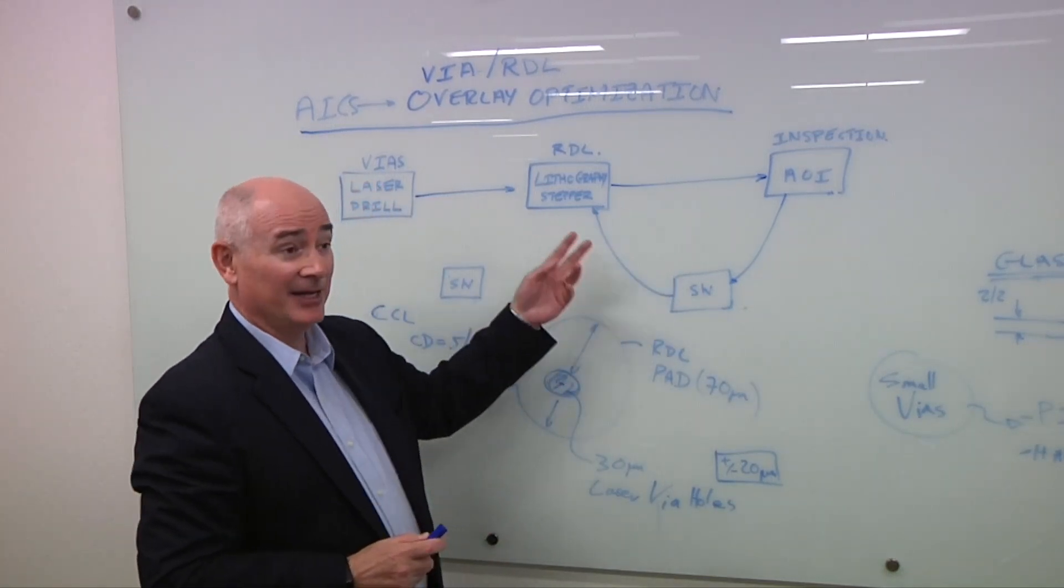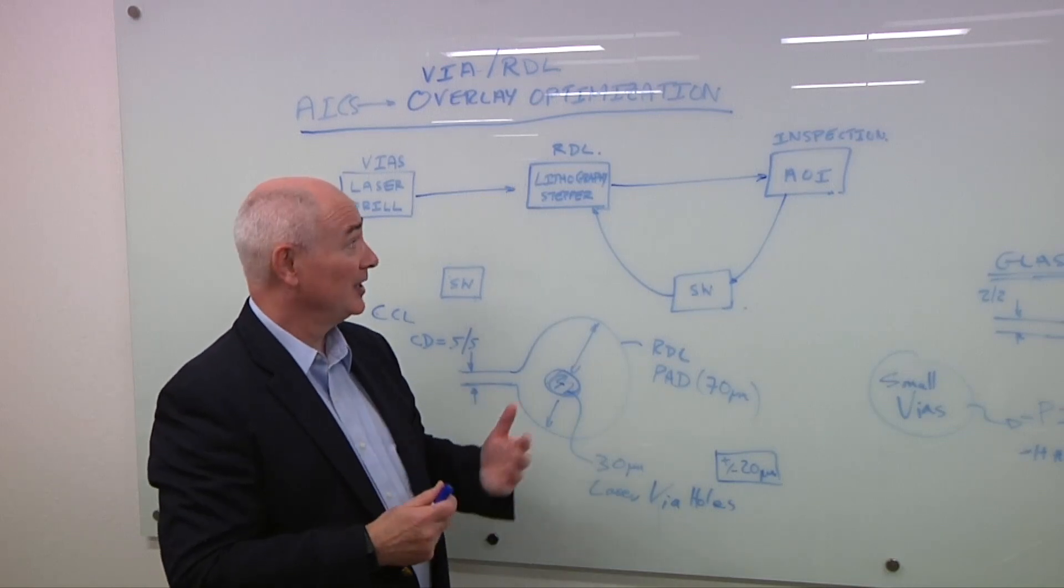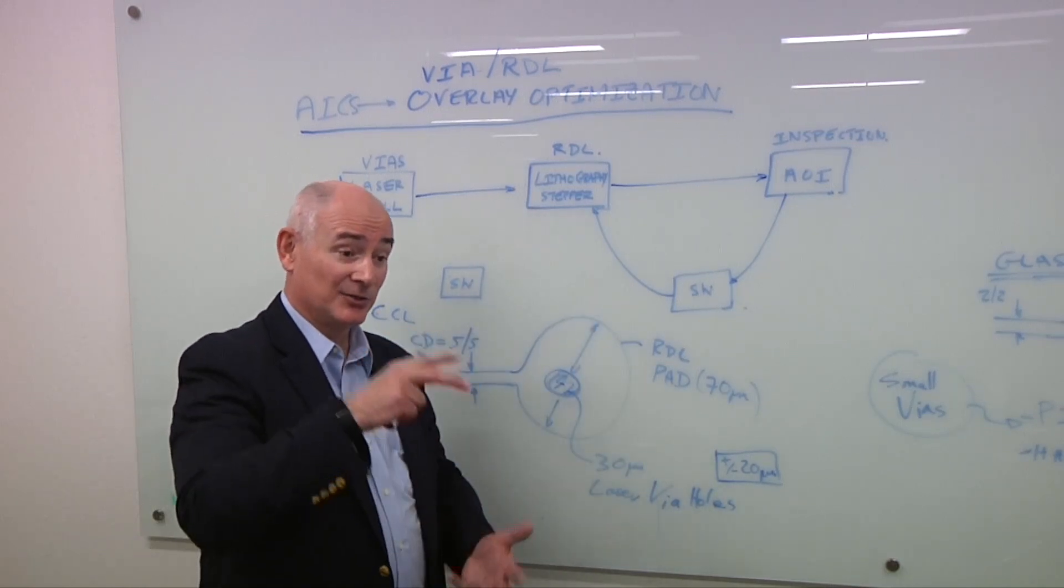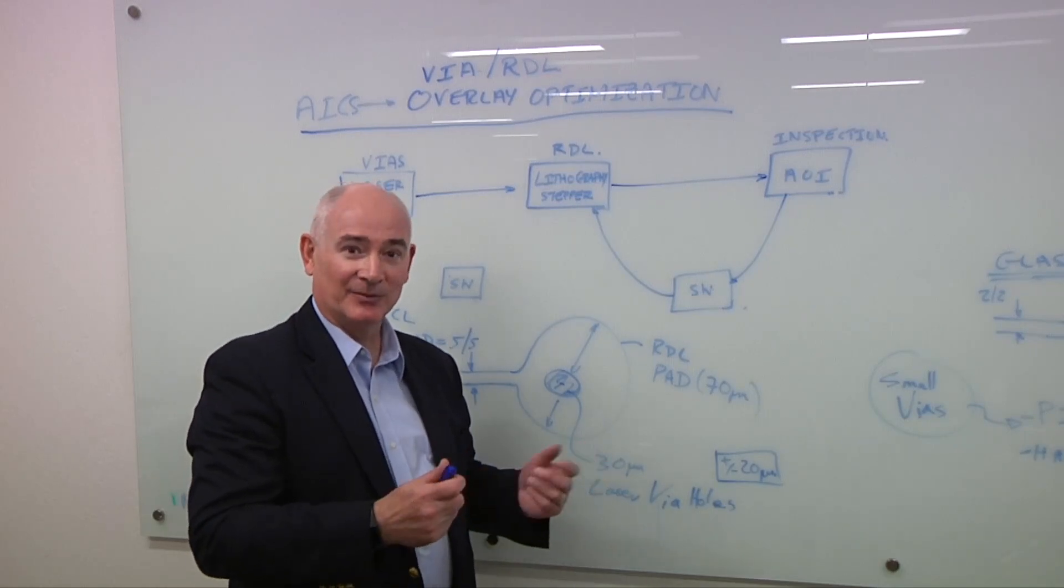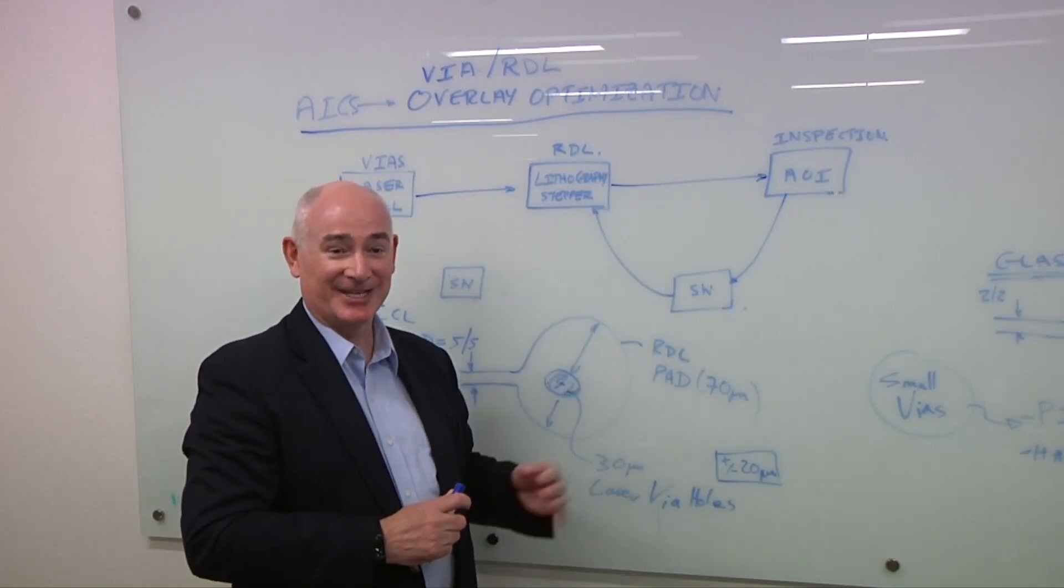So this is a way to actually tell the stepper based upon what I've measured, you need to make some adjustments to your lens to adjust for scaling, rotation, asymmetric magnification, and a whole bunch of other stepper terms. That's one approach to be able to solve the problem.